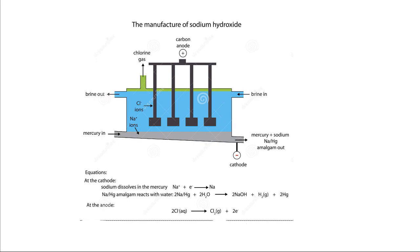We have the anode and the cathode. The anode gives chlorine gas, and then there is the cathode. The process, that is the diagram.